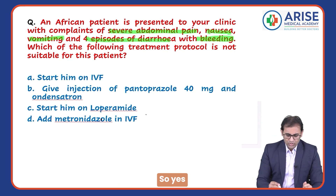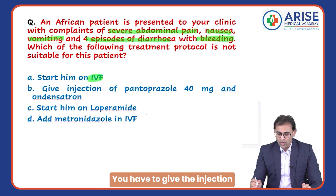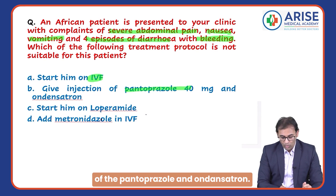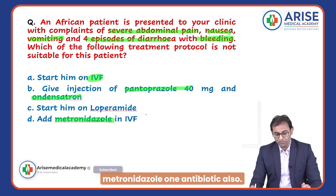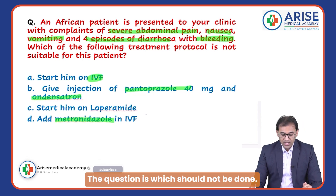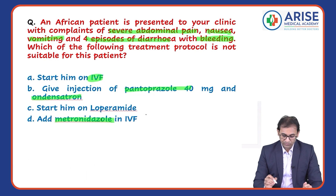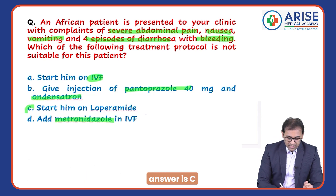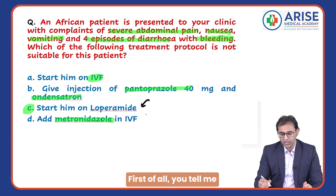Because of fluid loss, you can start the patient on IV fluids. You have to give injection pantoprazole and ondansetron. You are also going to add metronidazole as an antibiotic. The question is: which should NOT be done — which is not suitable? The answer is C: loperamide.